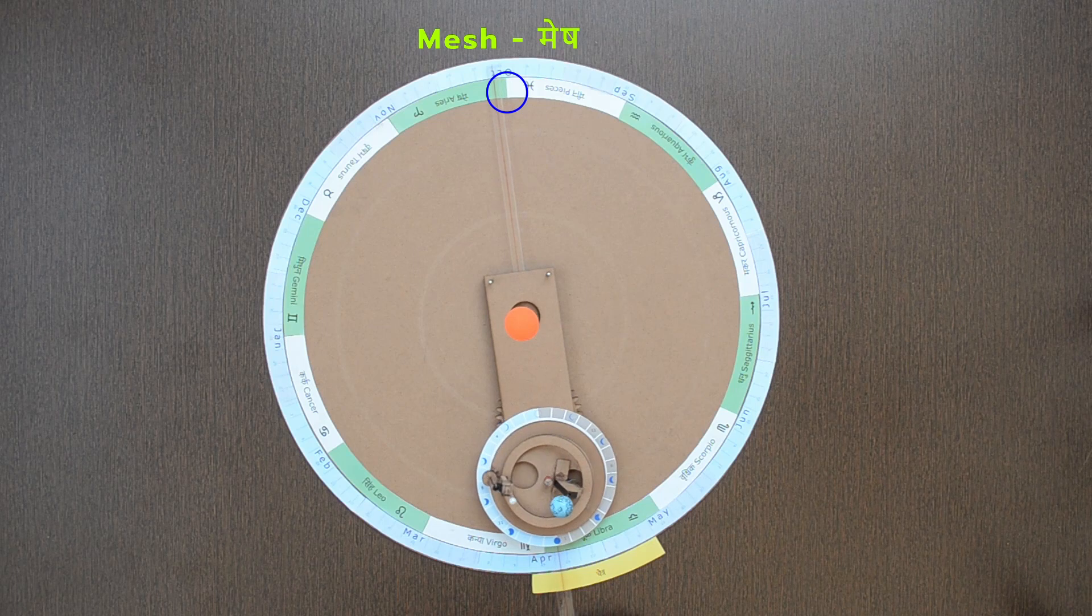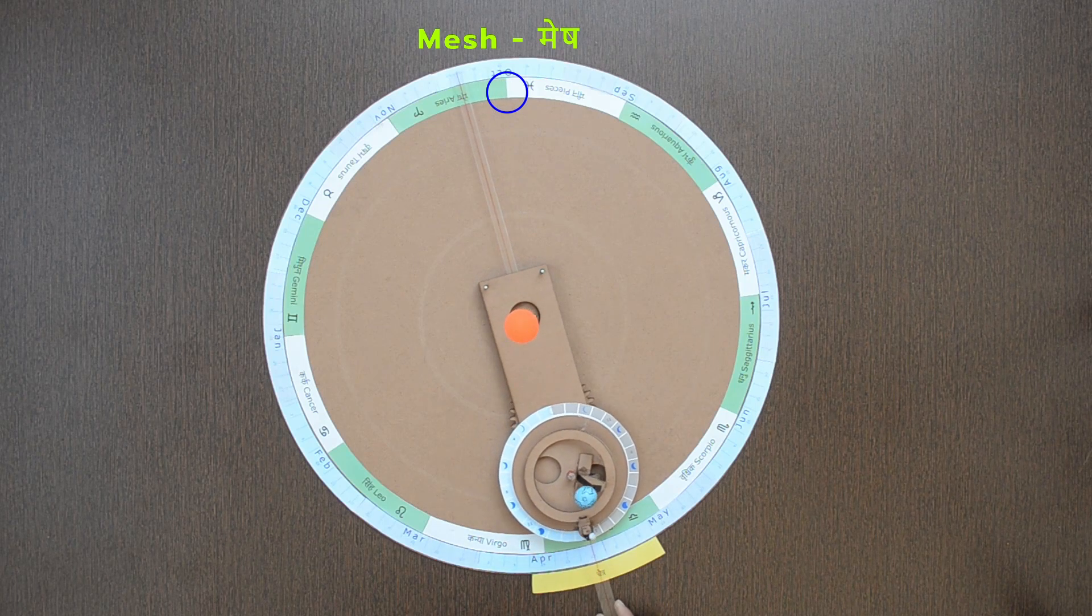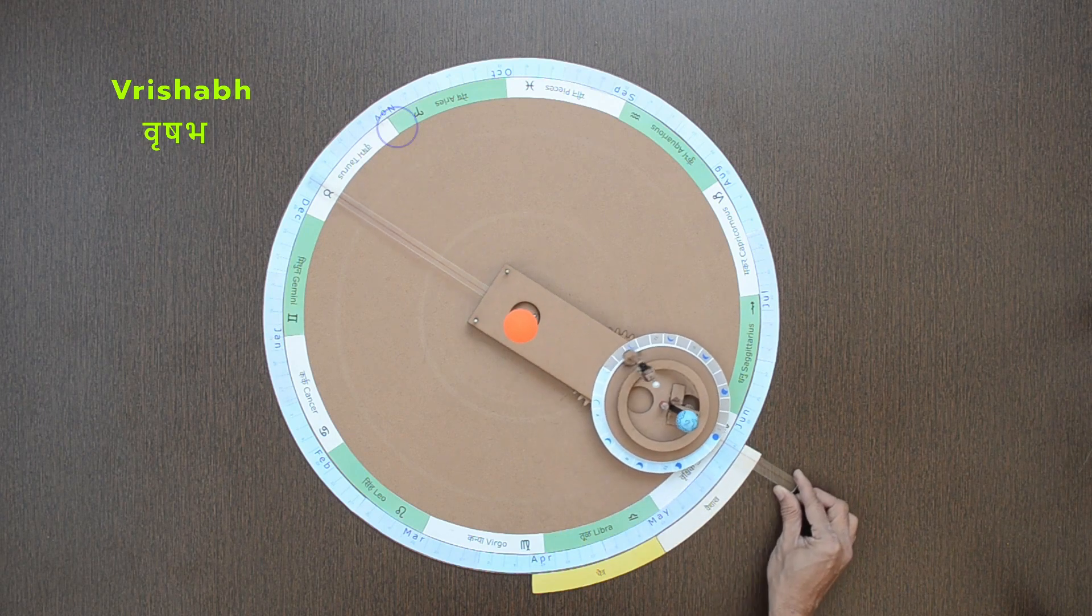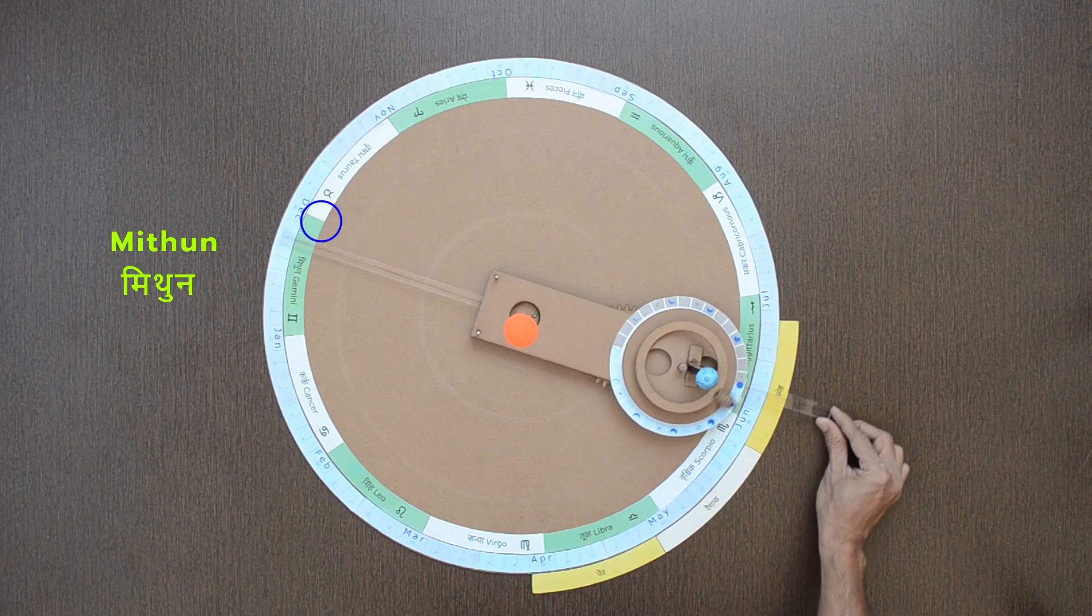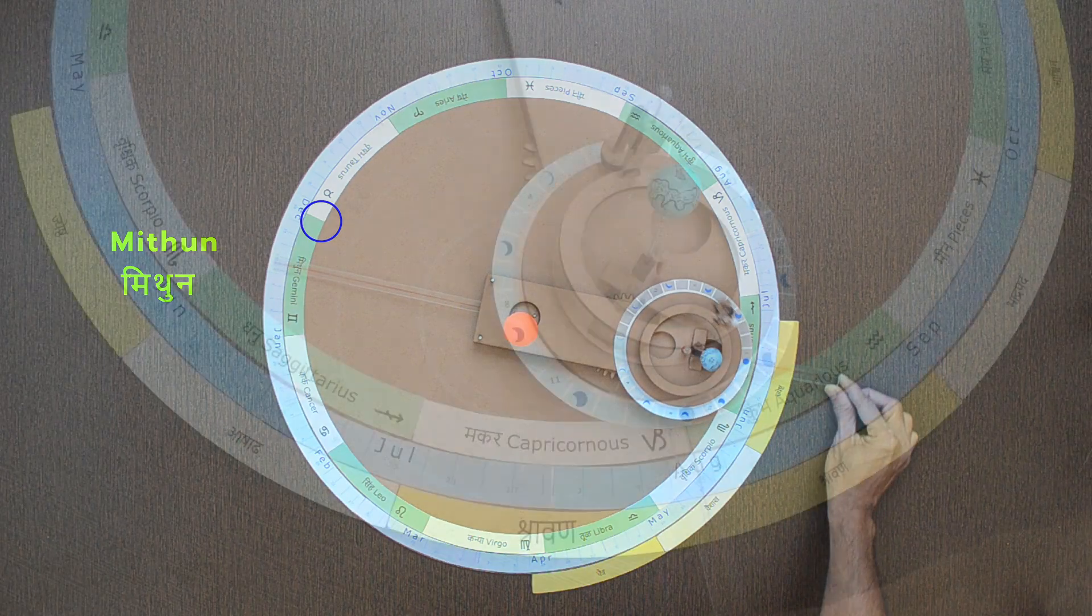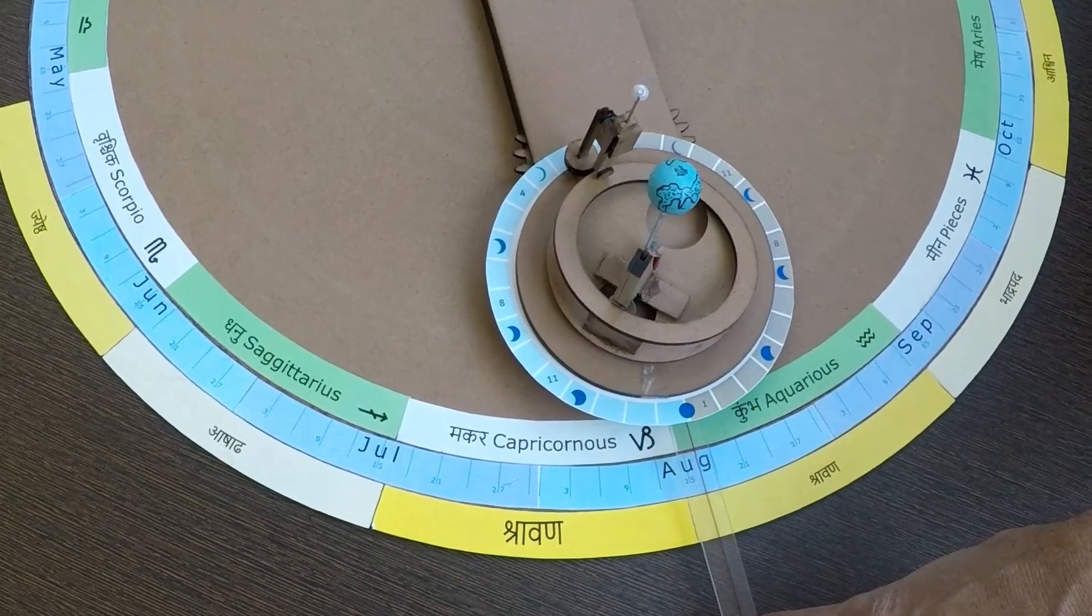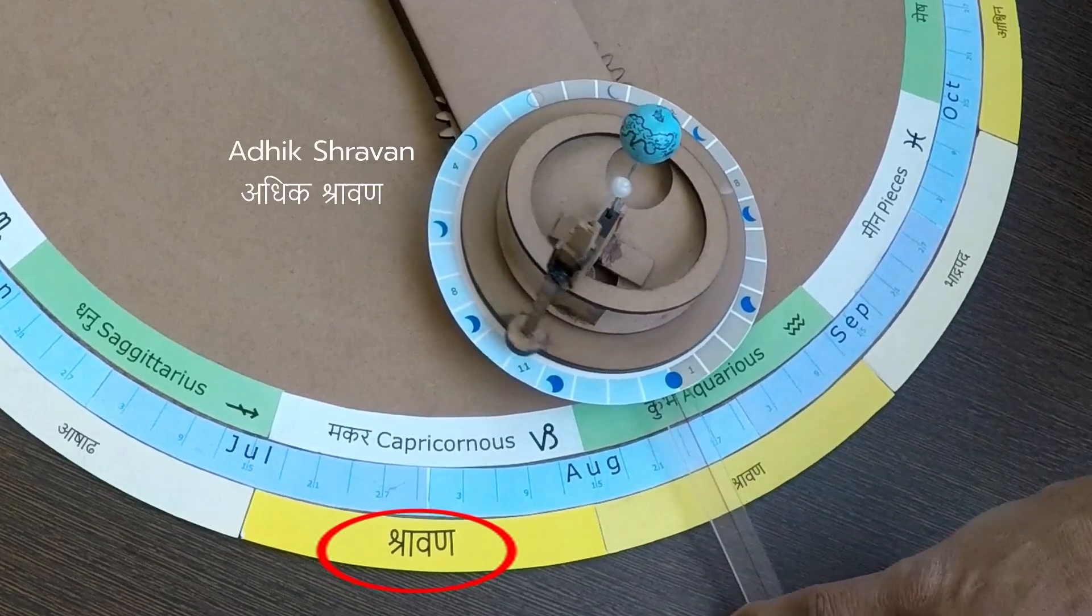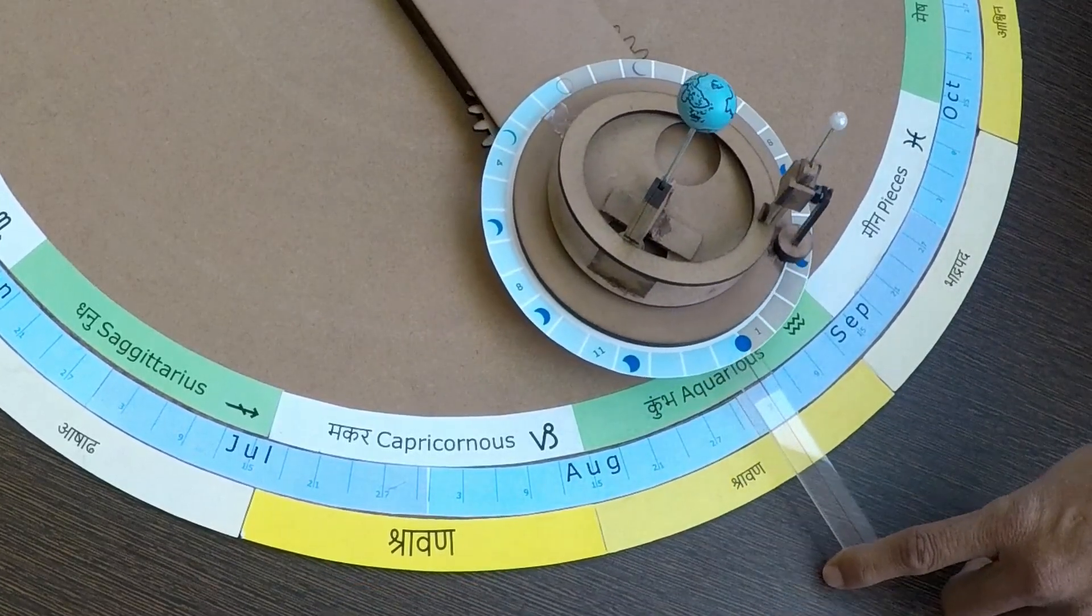Like in the month of Chaitra from Meen Rashi to Mesh, in Vaishak to Vrushabh Rashi, and in Jeshta to Mithun Rashi. If this transition does not take place in a particular month, that month is considered as extra month or Adhikmas for that year.